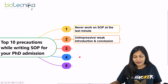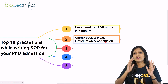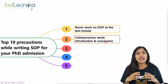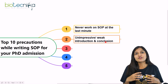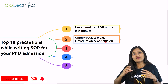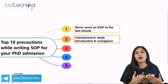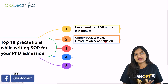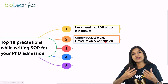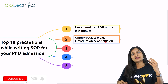The second precaution is to avoid an unimpressive or weak introduction and conclusion. Your SOP should have three paragraphs. In the first paragraph, introduce yourself to the reader — not with your name and CGPA, but with a statement describing yourself in relation to your research, or why you got fascinated towards science from a young age, and what brought you to this point.